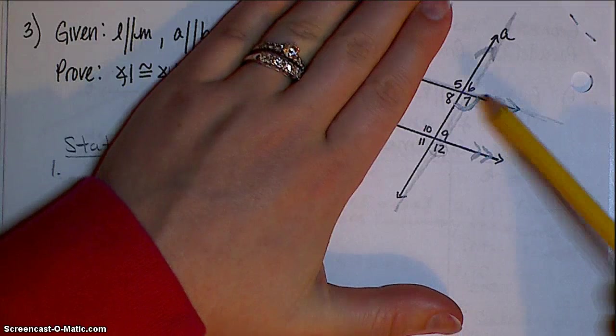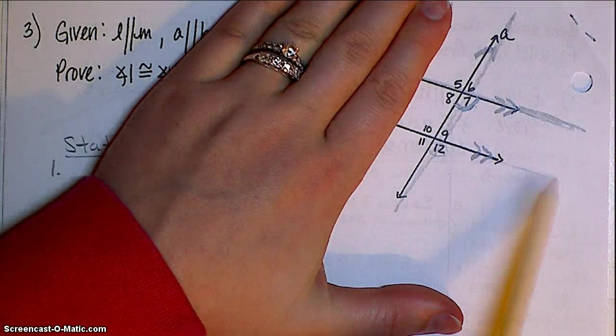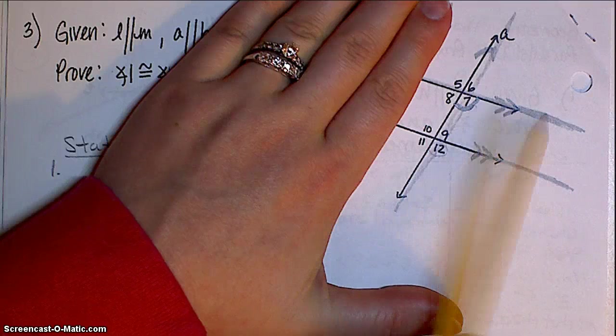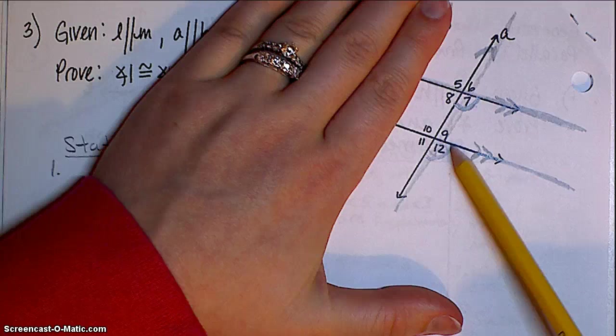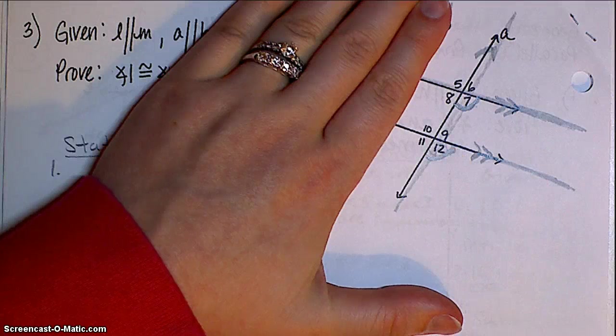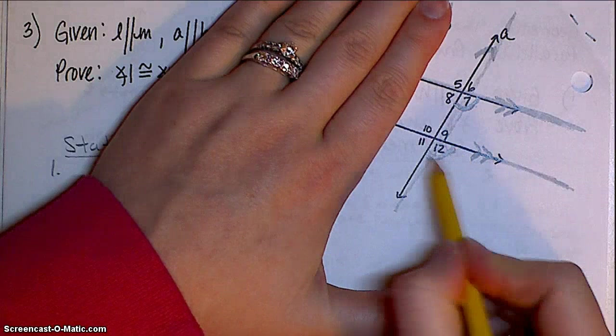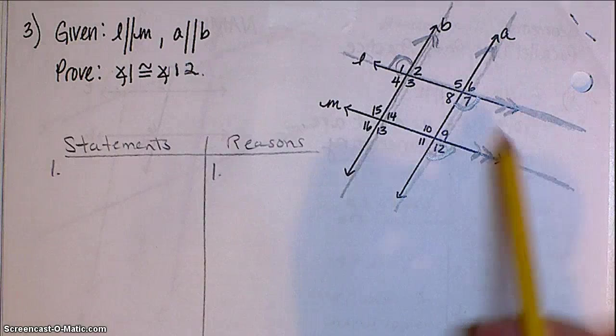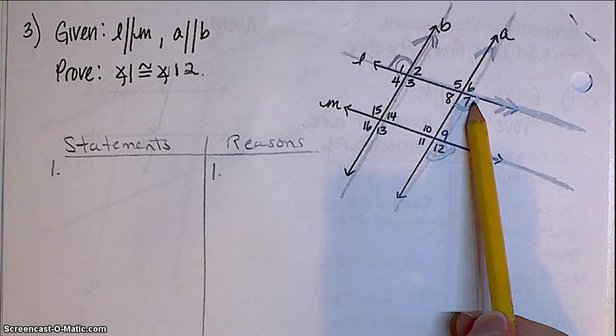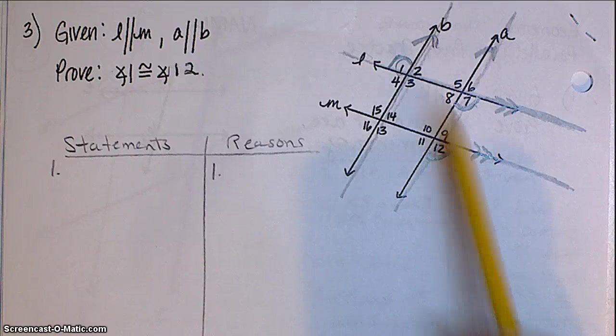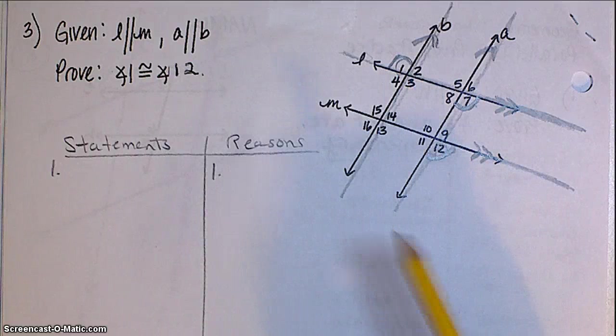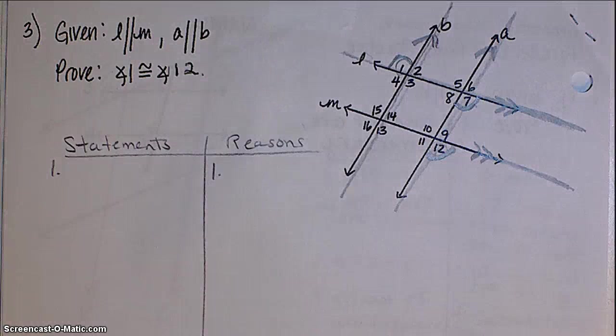Just focusing on these two parallel lines, I can see 7 and 12 are corresponding, which is good news for us, because that means we just showed if 1 is the same as 7, 7 is the same as 12. That means 1 is the same as 12 by substitution. So my game plan's done. I have a plan. I know what I'm going to do.